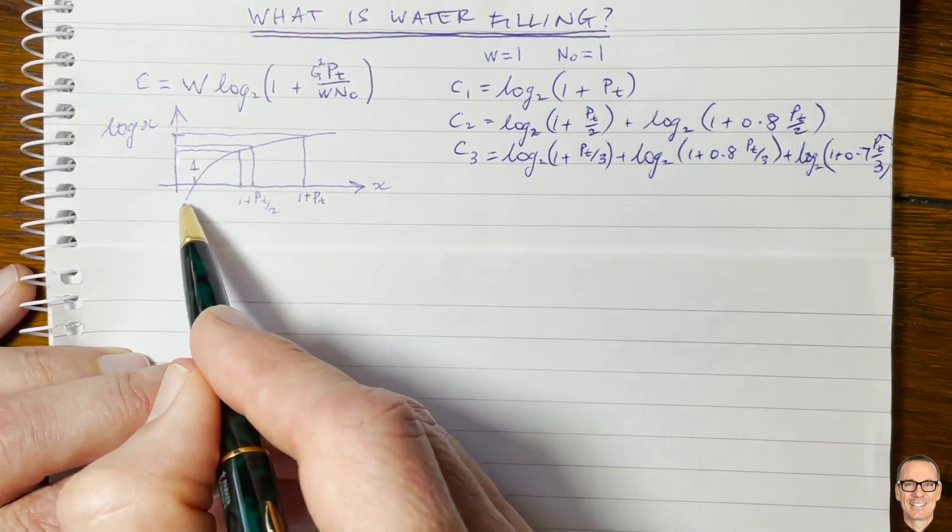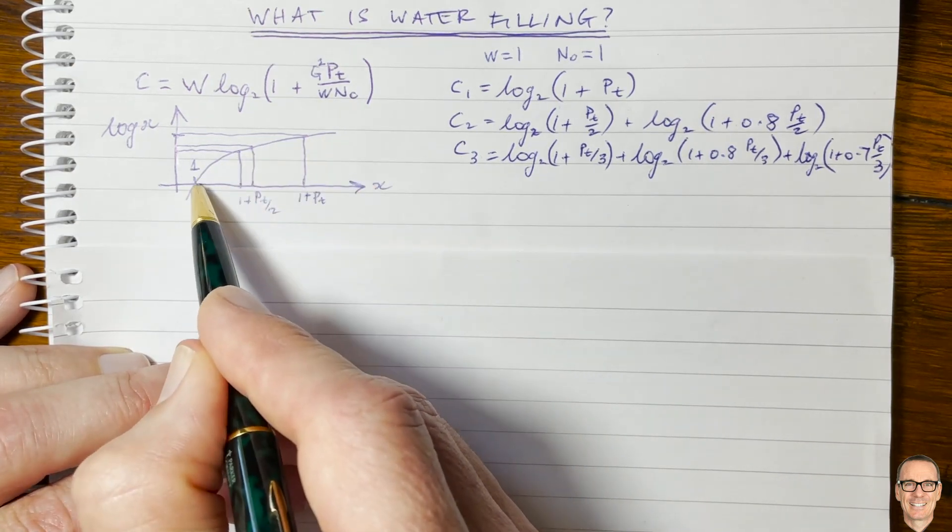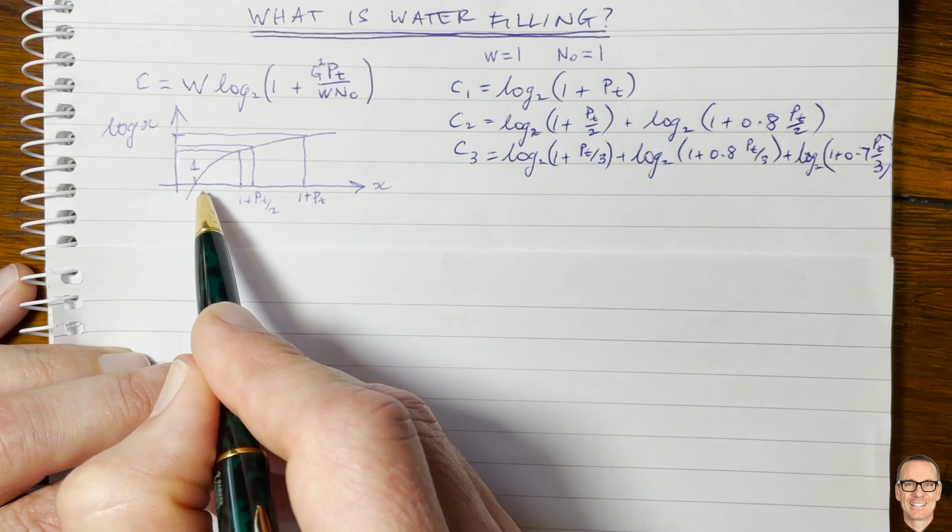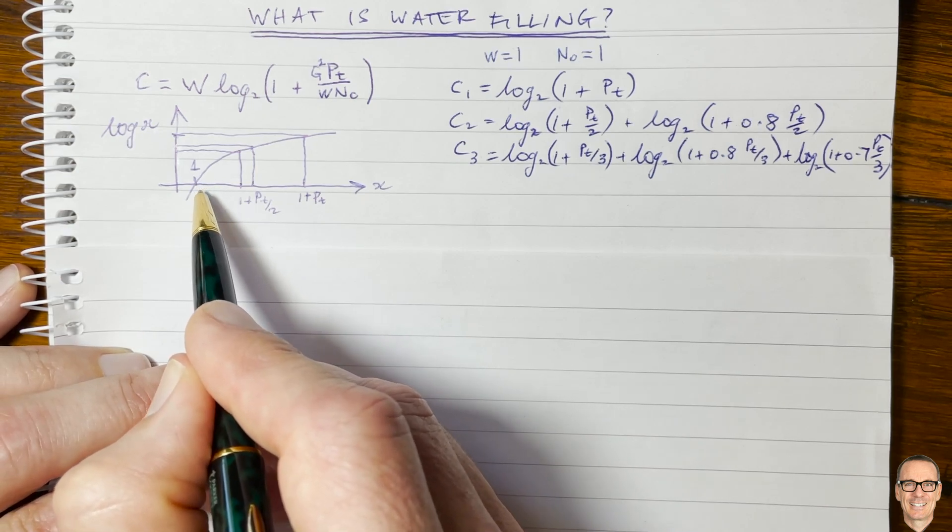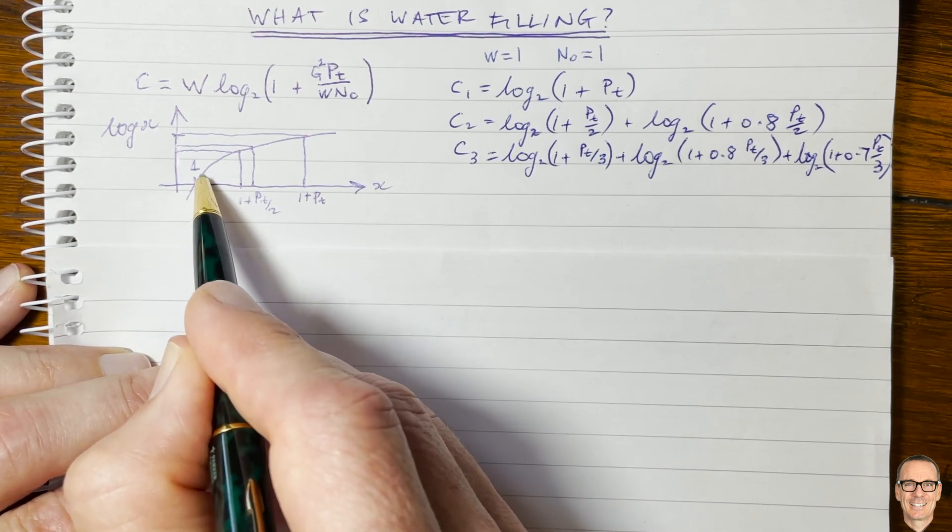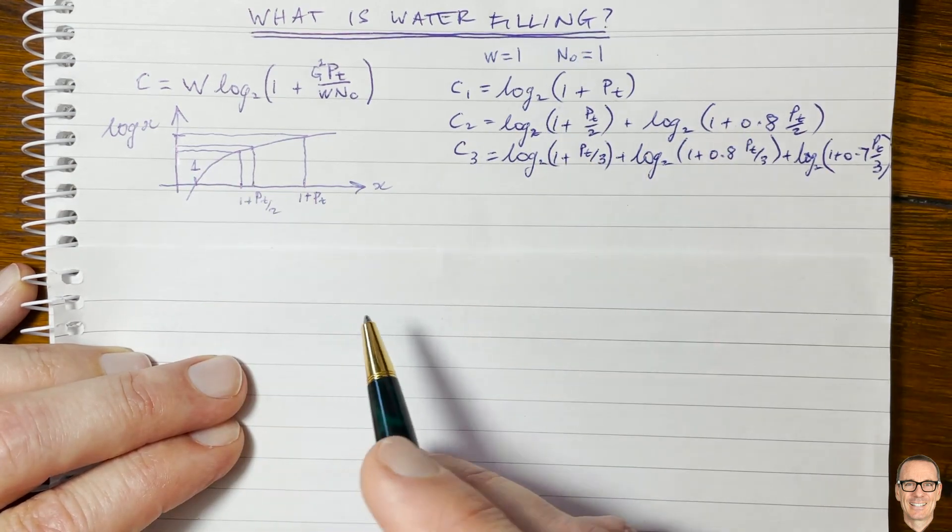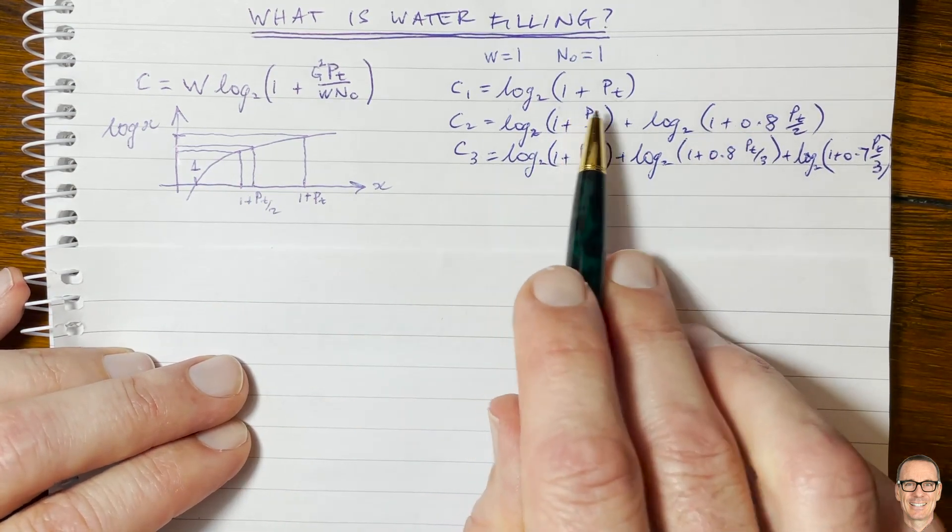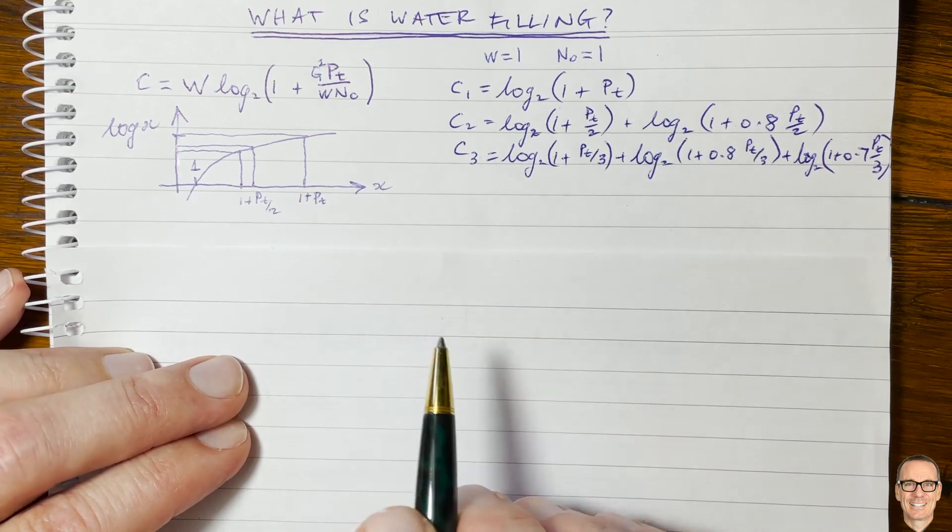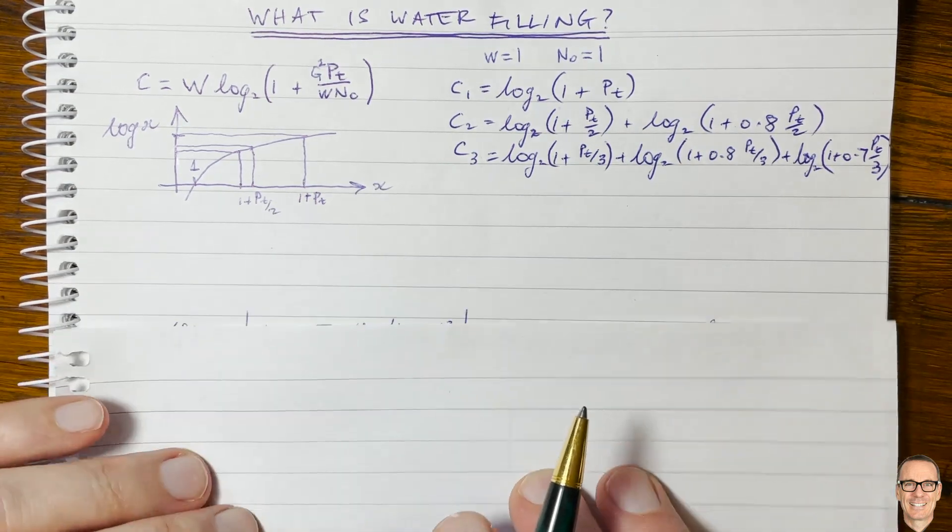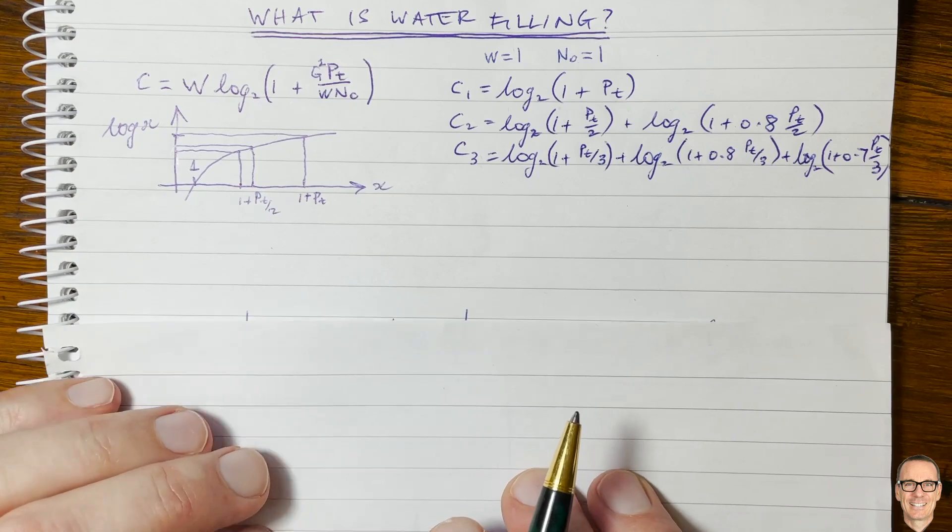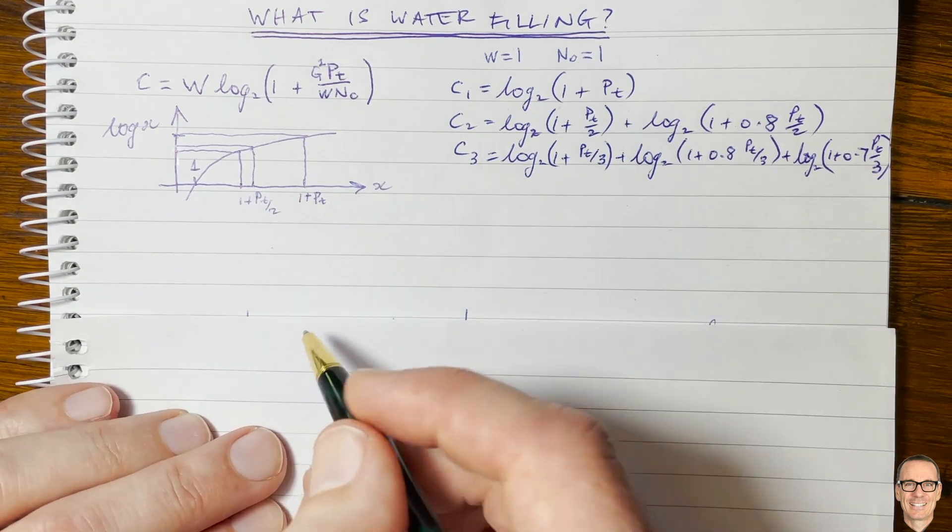Now this doesn't hold for all of this part of the curve, like look, think of the curve right down close to 1, like if the power is low, so if you've got a low power scenario, then this curve is going to be steeper, and it's not necessarily the case that it's better to share your power amongst the two sub-channels. So let's look at some examples for this to see if we can get some practical examples to think about here.